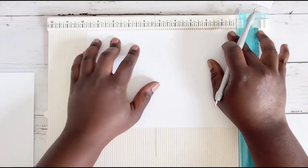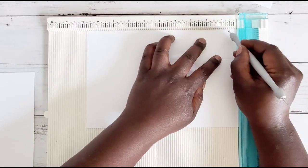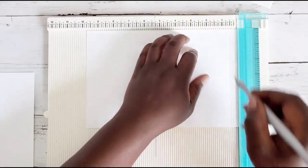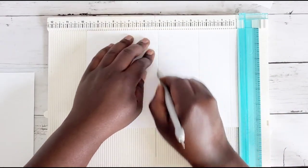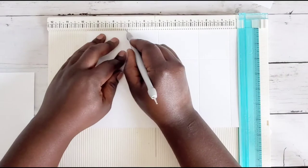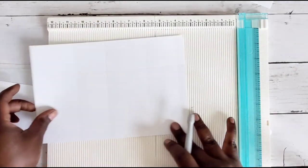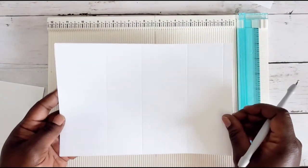Then we're going to rotate it and we are going to score it at half an inch, 2.5, 5 and one eighths, and 7 and one eighths. And then this is the sleeve that goes over your drawer.